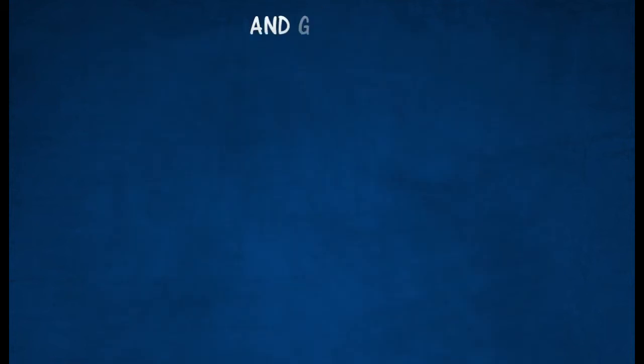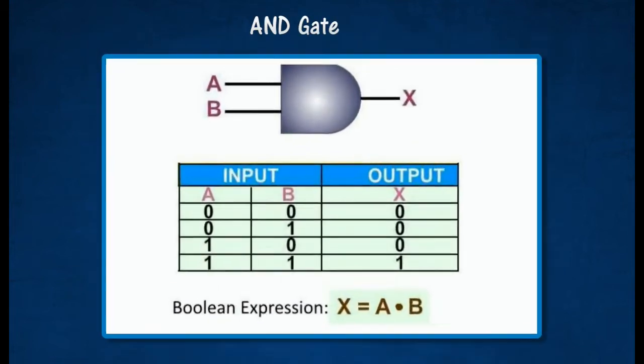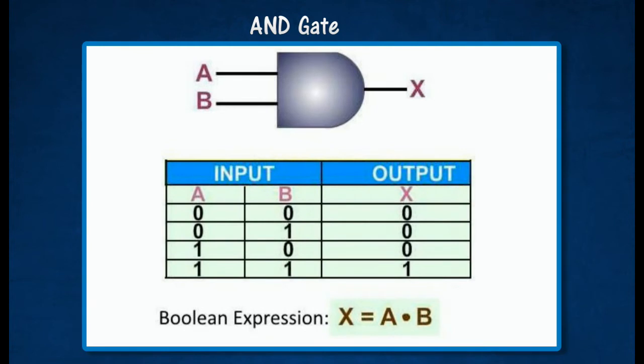The AND gate is so named because, if 0 is called false and 1 is called true, the gate acts in the same way as the logical AND operator. The following illustration and table show the circuit symbol and logic combinations for an AND gate. The output is true when both inputs are true. Otherwise, the output is false.